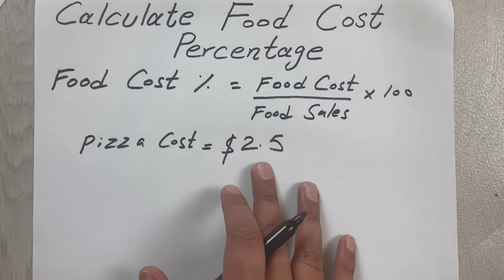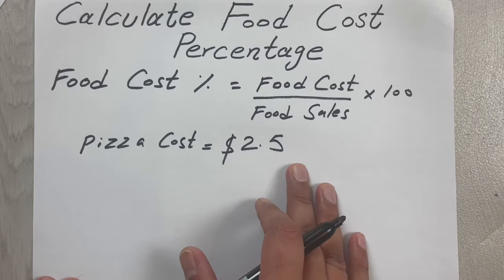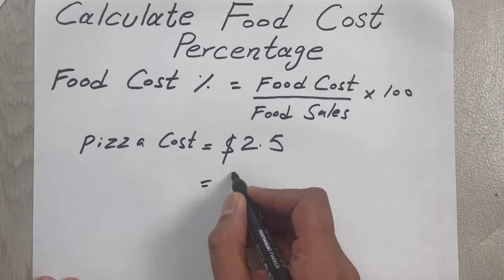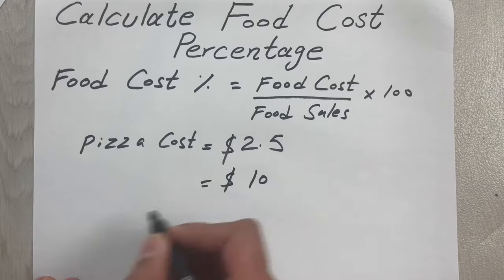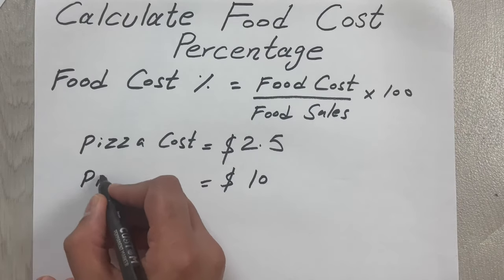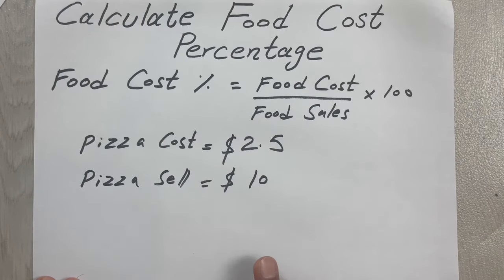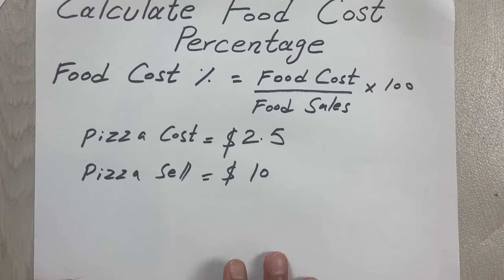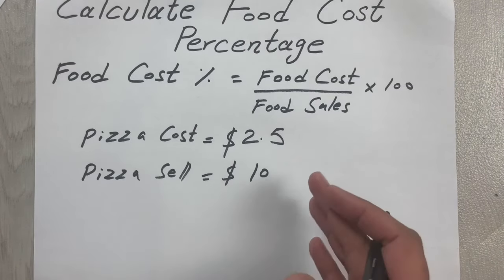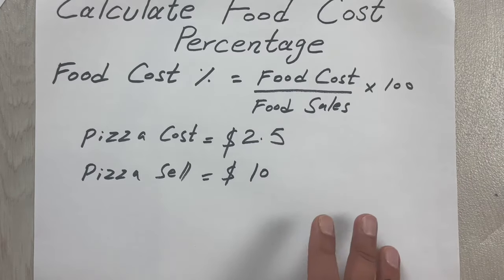Let's assume we're going to sell that pizza for $10. The pizza sells at $10. Now it is very simple—we can put the values into this formula and we will get our food cost percentage.